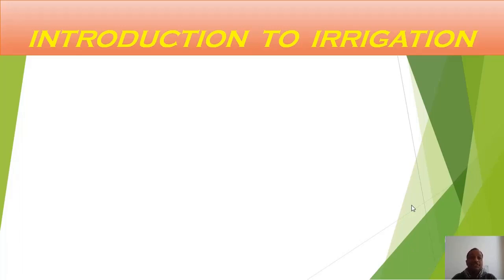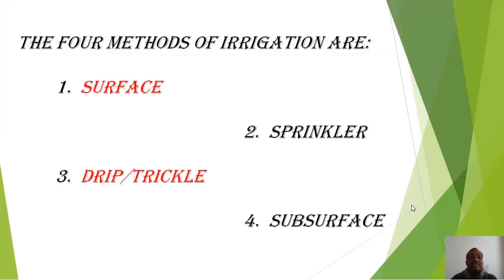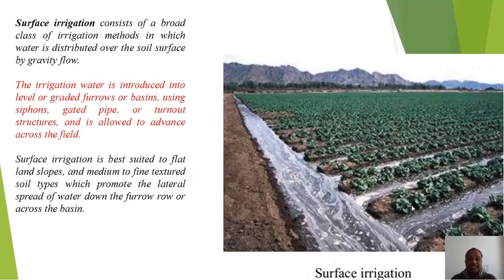In this video tutorial we will learn a basic concept from irrigation engineering — the methods of irrigation. There are four methods: first is surface irrigation, second is sprinkler irrigation, third is drip or trickle irrigation, and fourth is subsurface irrigation. Surface irrigation consists of a broad class of methods in which water is distributed over the soil surface by gravity flow, introduced into level or graded furrows or basins using siphons.